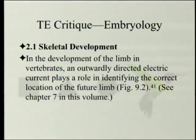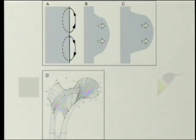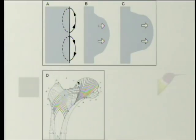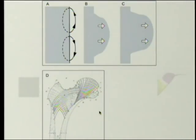Skeletal development: in the development of the limb in vertebrates, an outwardly directed electric current plays a role in identifying the correct location of the future limb. This electrical current induces various chemicals which cause the limb bud to form. Remarkably, the femur already has trabeculae oriented precisely for bearing weight — yet the embryo has never walked. This is a pre-pattern anticipating the loading demands on the bone.